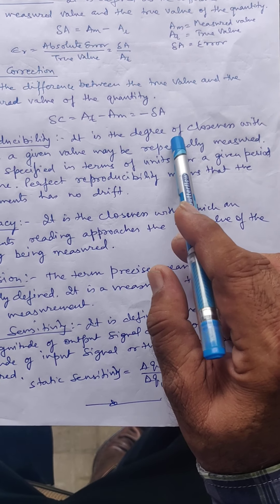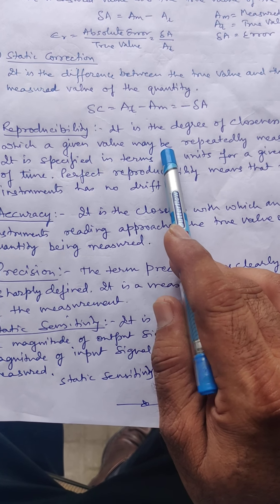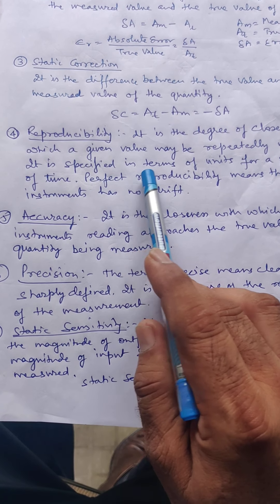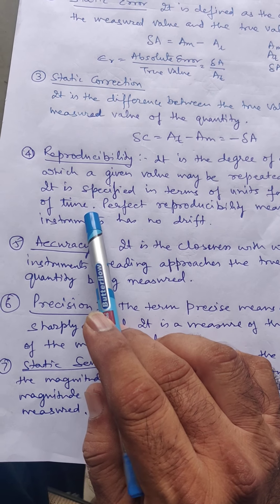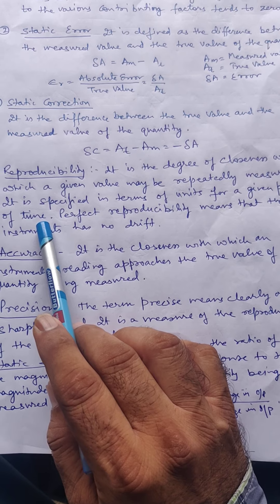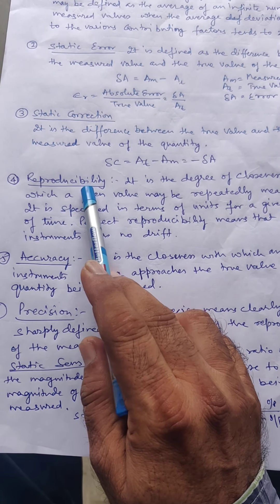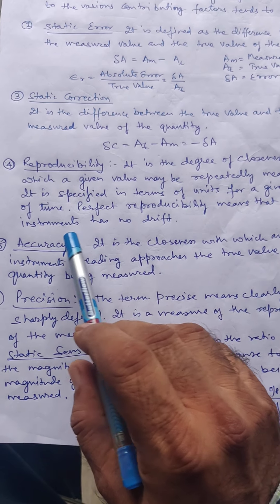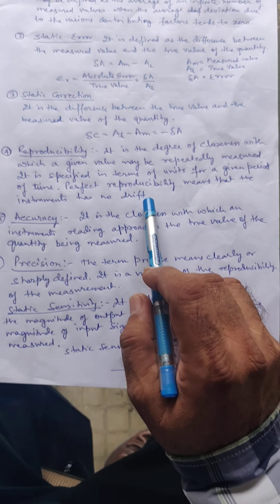Reproducibility is the degree of closeness with which a given input may be measured repeatedly over a given period of time and number of measurements. Perfect reproducibility means the instrument has no drift, and drift means error in the instrument.